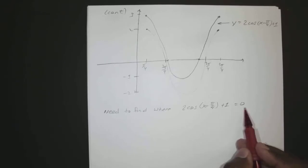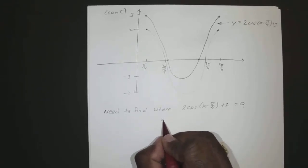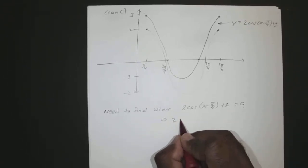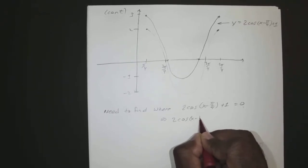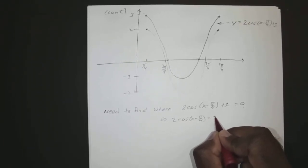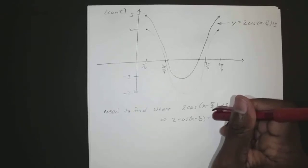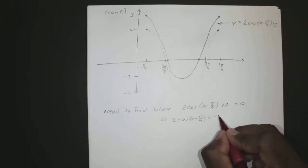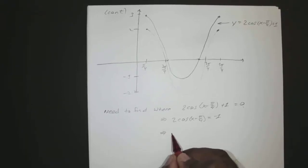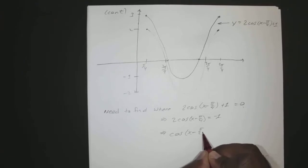If we subtract 1 from both sides, 2 cosine of x minus pi over 4 equals negative 1. Divide by 2, we know that cosine of x minus pi over 4 equals negative 1 half.